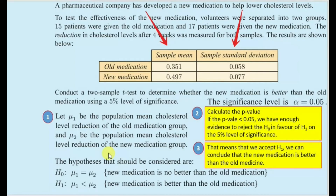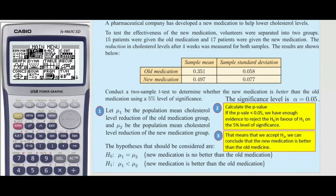I am going to show you how this is going to be calculated using a calculator, and then we will draw a conclusion based on that. Let's analyze the data now to determine whether the new medication is better than the old medication using a 5% level of significance as given in the question.